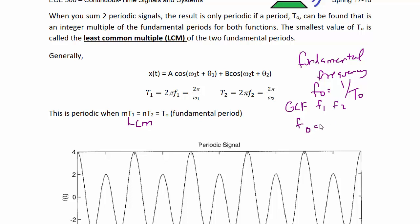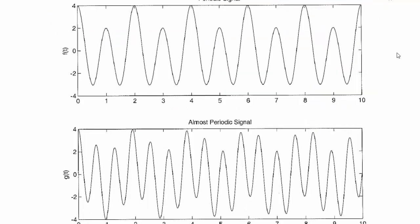So f₀ would be equal to f₁/m which equals f₂/n. The following two figures show examples of summing together two periodic signals where the result is, in the top case, a periodic signal, but in the bottom case it's aperiodic — meaning it was not possible to find the least common multiple between the two signals. In the top signal it is possible to find the period; for example, one period would be t = 4 seconds. However, this is not the fundamental period because it's not the smallest, so the fundamental period is actually t₀ = 2 seconds.